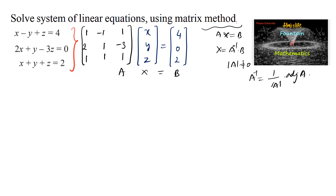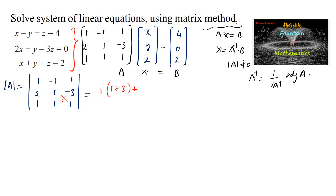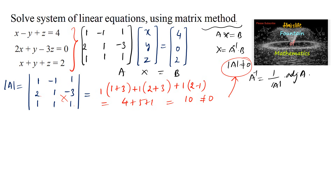Let's find the determinant to check whether the system has a unique solution. The determinant of A, expanding along the first row, gives: 1×(1+3) minus (−1)×(2+3) plus 1×(2−1), which equals 4 plus 5 plus 1 equals 10. Since det(A) = 10 ≠ 0, the system has a unique solution.